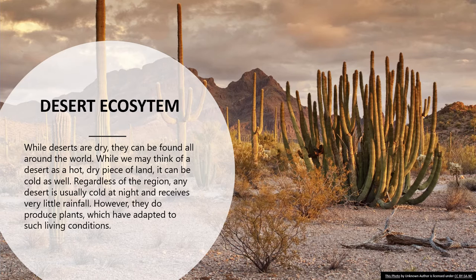What is a desert? A desert is basically a weathering phenomenon where large rocks break down to finer particles because of this extreme temperature variation within a day. Regardless of the region, any desert is usually very cold at night — somewhere temperatures go below the freezing point — and receives very little rainfall. However, deserts do produce plants which have adapted to such living conditions. You will be amazed that even after such extreme weather conditions, some plants do survive there. There are many adaptations found in the flora and fauna surviving in that region.